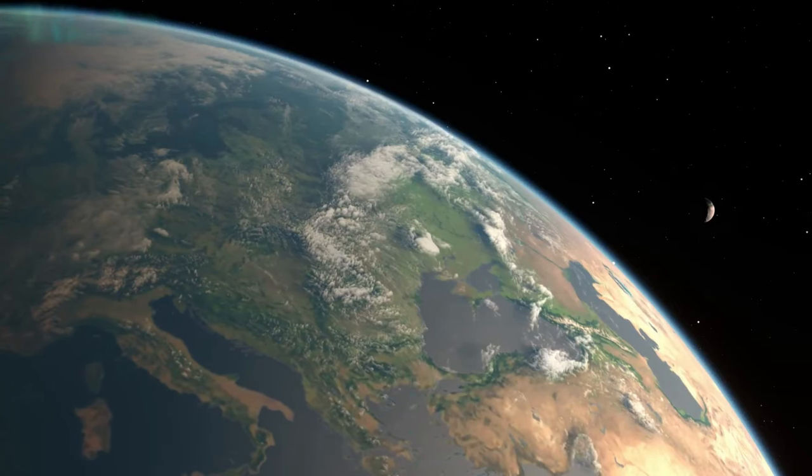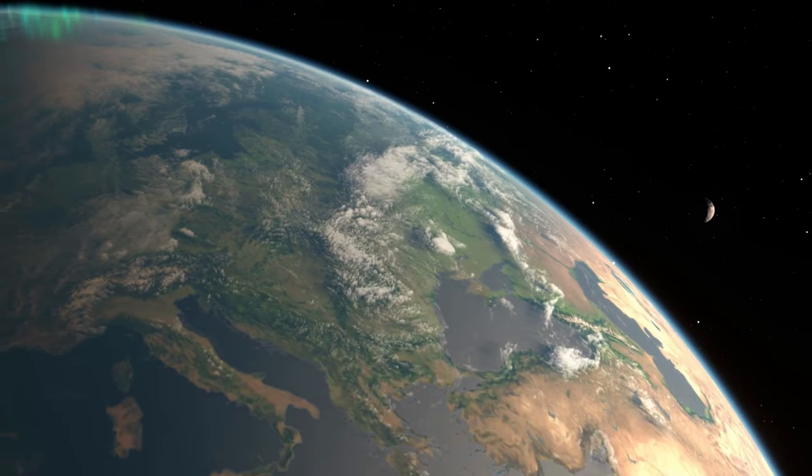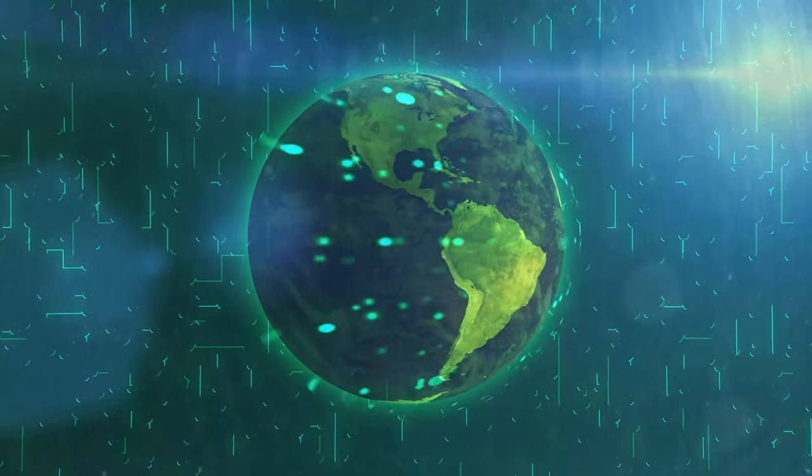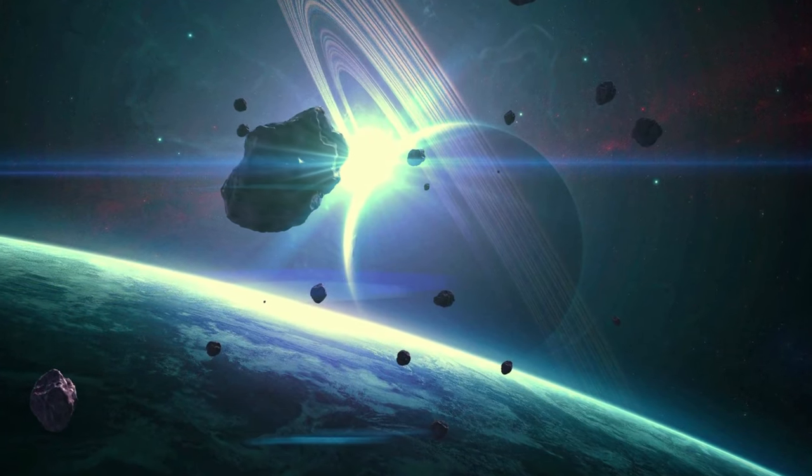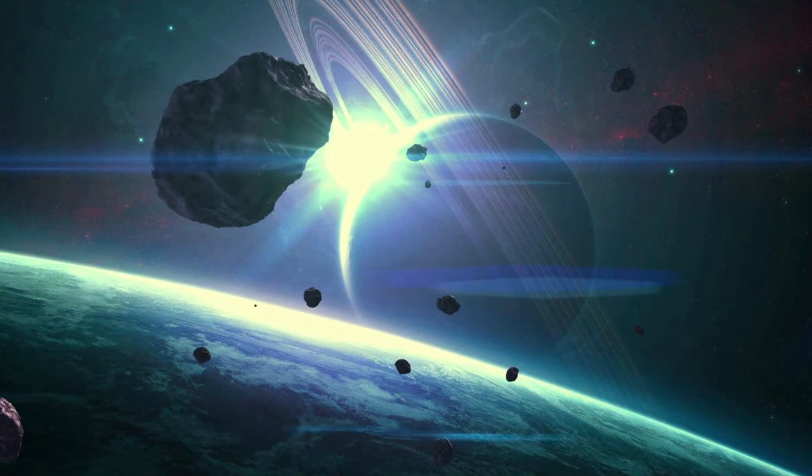When the magnetic field weakens during a polar flip, the implications for life on Earth can be substantial. A weakened field allows more harmful space radiation to reach the planet's surface.